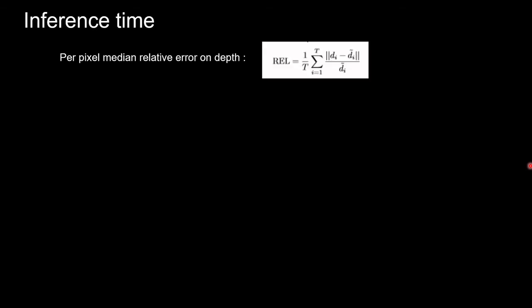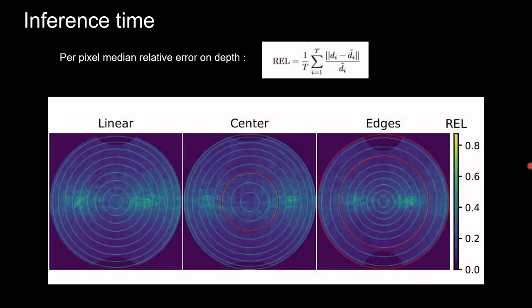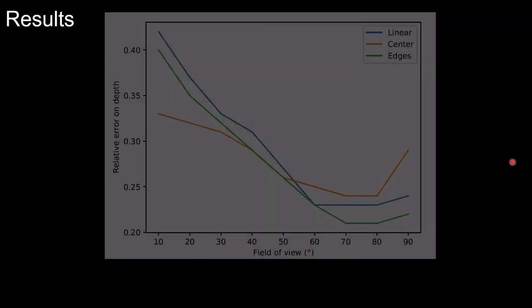At first, we compute the median relative error for each pixel to obtain those error maps. Each ring represents 10 degrees of field of view and the red circles indicate the area of increased resolution. We calculate the median value of this error for each section of the field of view and obtain those results.